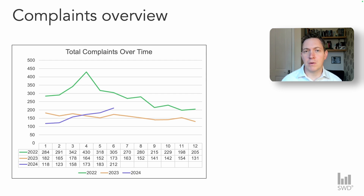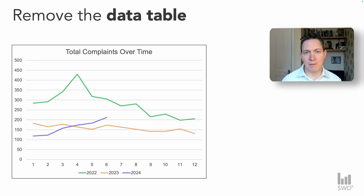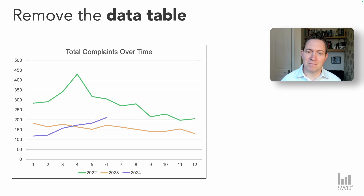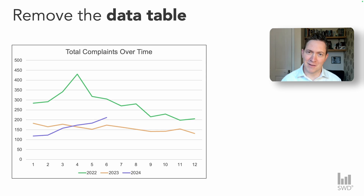Now that I have these outlined, I can begin to refine my visual with the intention of ensuring that these insights are clearly visible. To begin with, I'm going to remove the data table. Whilst having precise numbers available can be useful in some situations, I think in this case it distracts from the main purpose of our graph, which is to see the trends of the data.